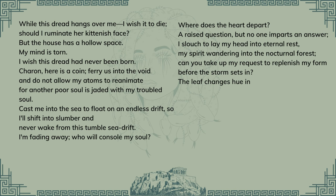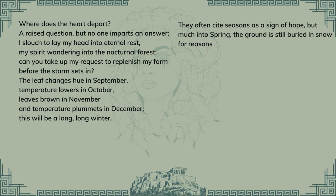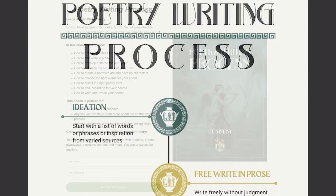The leaf changes hue in September, temperature lowers in October, leaves brown in November, and temperature plummets in December. This would be a long, long winter. They often cite seasons as a sign of hope, but much into spring, the ground is still buried in snow. For reasons unknown, scientists baffled by the phenomenon. Theologians shouting Armageddon, drifting in my blanket snowman cover, a few words humming along as the icy winter takes over.